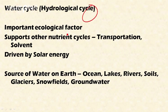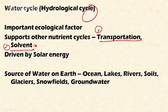The water cycle is an important ecological factor which determines the structure and function of the ecosystem, as it is a very basic component of the ecosystem. The water cycle also supports other nutrient cycles through two important characteristics: water acts as a transportation agent, and water is a universal solvent — it dissolves almost all solutes available in the ecosystem. By virtue of these two characteristics, water supports nutrient cycles like carbon, hydrogen, oxygen, sulfur, and phosphorus cycles.